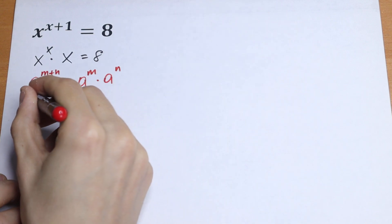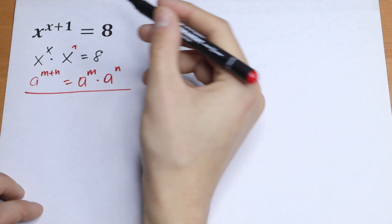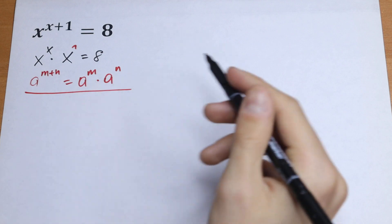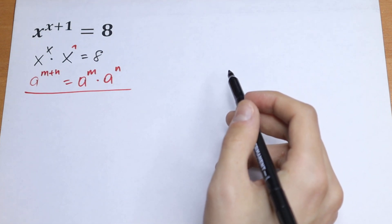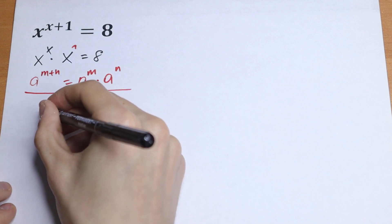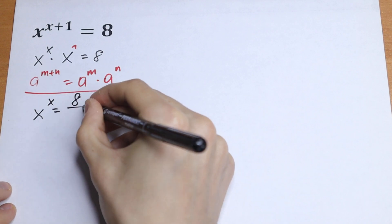I just use this rule right here, because this is our x to the first power. Nothing hard, just using this rule. What we're going to do next? We can divide both sides by x, so as a result we will have x to the power x equal to 8 over x.